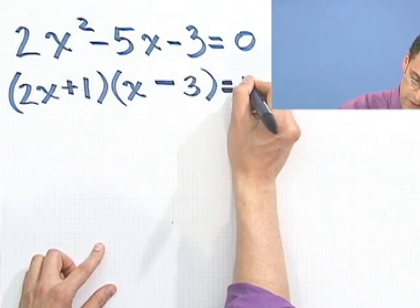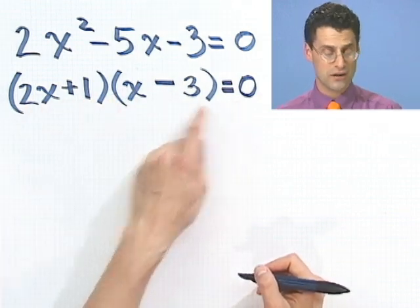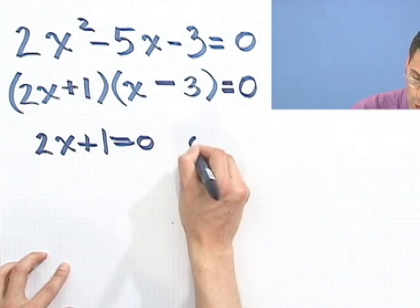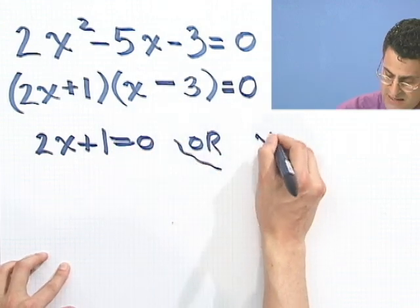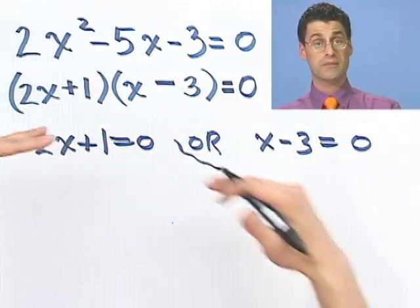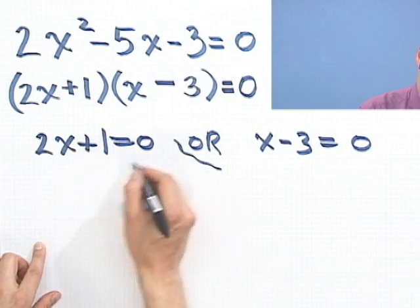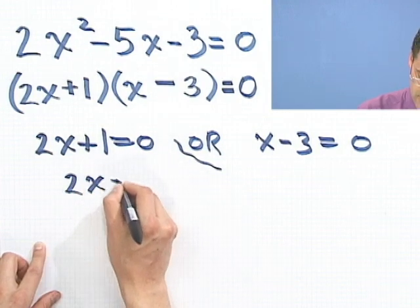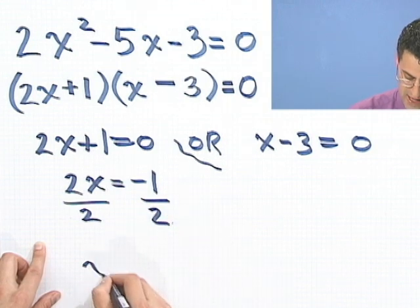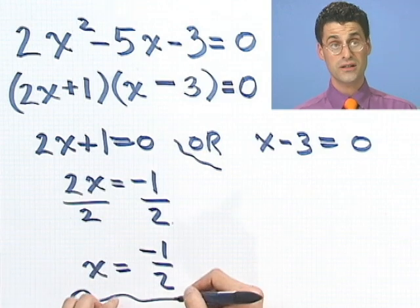So I've just factored that thing. And so now I have two things that multiply to give 0. So either this thing, 2x plus 1 equals 0, or the other possibility is that x minus 3 equals 0. And I have to solve each of these individually, and I'm going to see my two solutions forming here. If I bring this over to the other side, I'd see a minus 1 on the right. So I'd see a 2x equals minus 1. If I divide both sides now by 2, I see that x would have to be minus a half. So that's one solution.